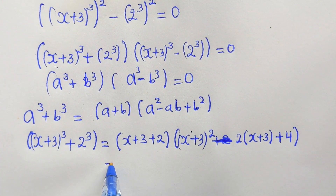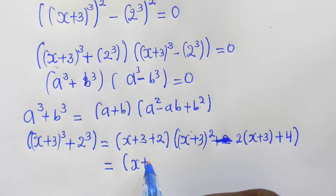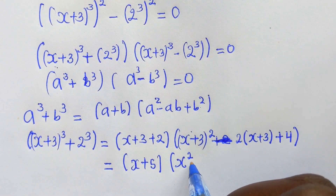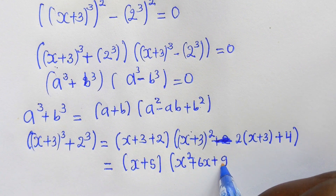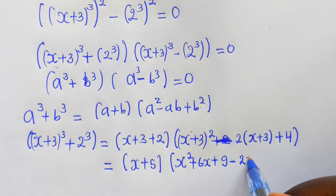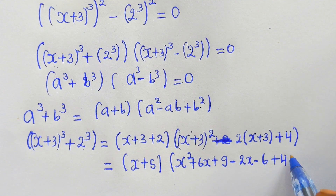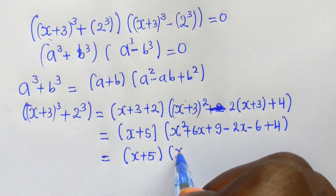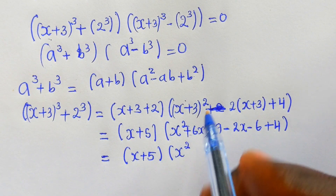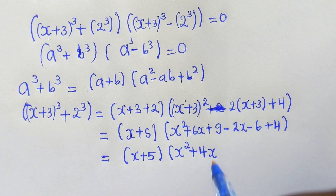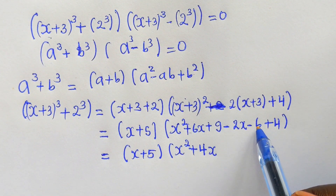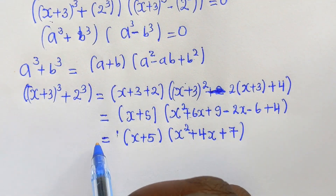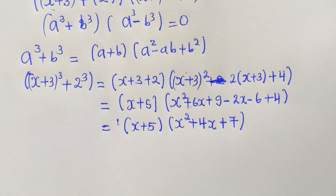Expanding: (x+3)^2 = x^2 + 6x + 9, minus 2(x+3) = minus 2x minus 6, plus 4. Combining like terms gives x^2 + 4x + 7. So the first factor becomes (x+5)(x^2 + 4x + 7) = 0.